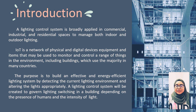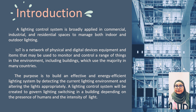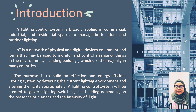The purpose is to build an effective and energy-efficient lighting system by detecting the current lighting environment and altering the light appropriately. The Electrical Control System will be critical to govern lighting switching in a building depending on the presence of humans and the intensity of light.